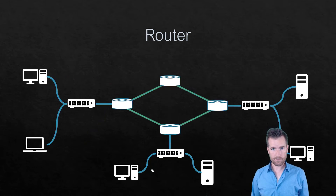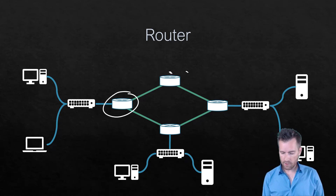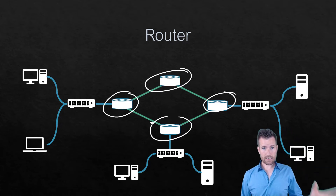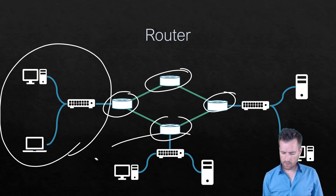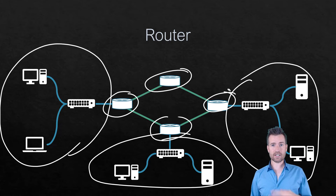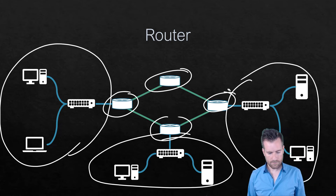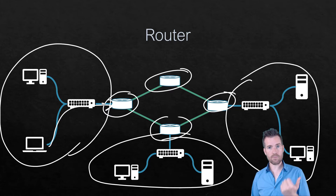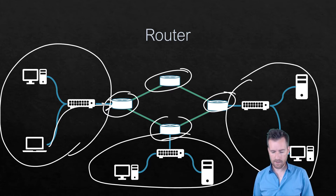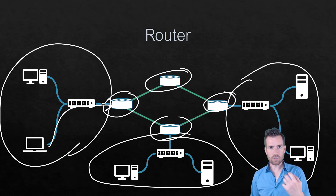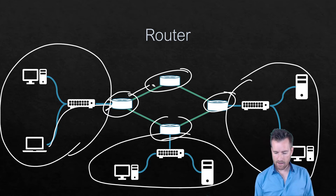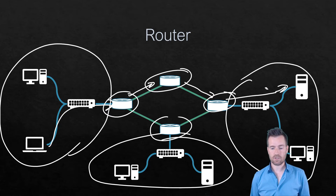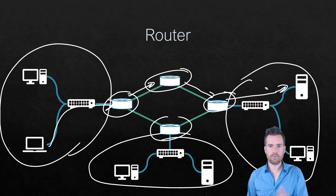Now let's talk about a router. We have four routers on this diagram and what they're doing is interconnecting different networks. We've got three networks with end devices, and the routers interconnect them. Their job is to forward information — when a packet arrives, the router determines the next best route or next best hop and forwards that packet on toward its destination.